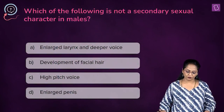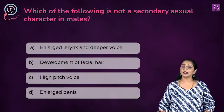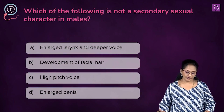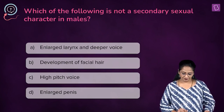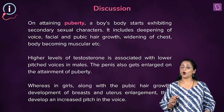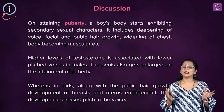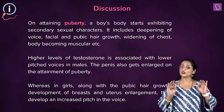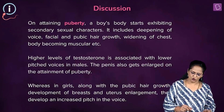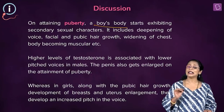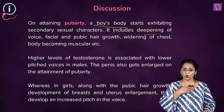A new question: which of the following is not a secondary sexual character in males? A. Enlarged larynx and deeper voice. B. Development of facial hair. C. High-pitched voice. D. Enlarged penis. On attaining puberty, there are changes that a boy or girl undergoes when they reach sexual maturity. The boy's body starts showing secondary sexual characters such as deepening of the voice, a low-pitched voice, and enlargement of the larynx.